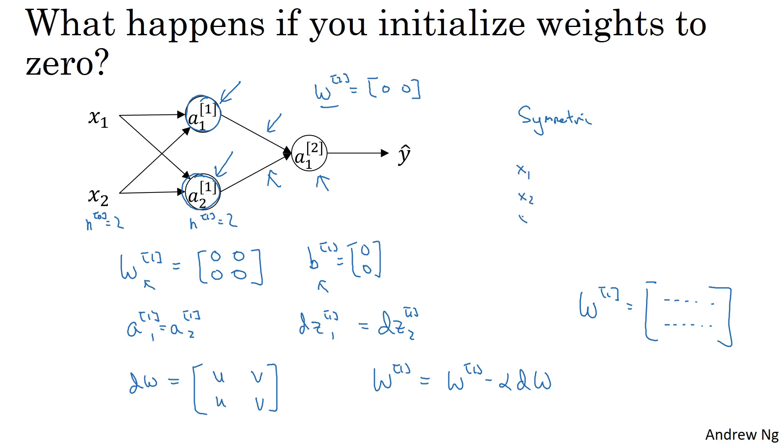And of course, for larger neural networks, let's say you have three features and maybe a very large number of hidden units, a similar argument works to show that with a neural network like this, if you initialize the weights to 0, then all of your hidden units are symmetric, and no matter how long you run gradient descent, they'll all continue to compute exactly the same function. So that's not helpful because you want the different hidden units to compute different functions.